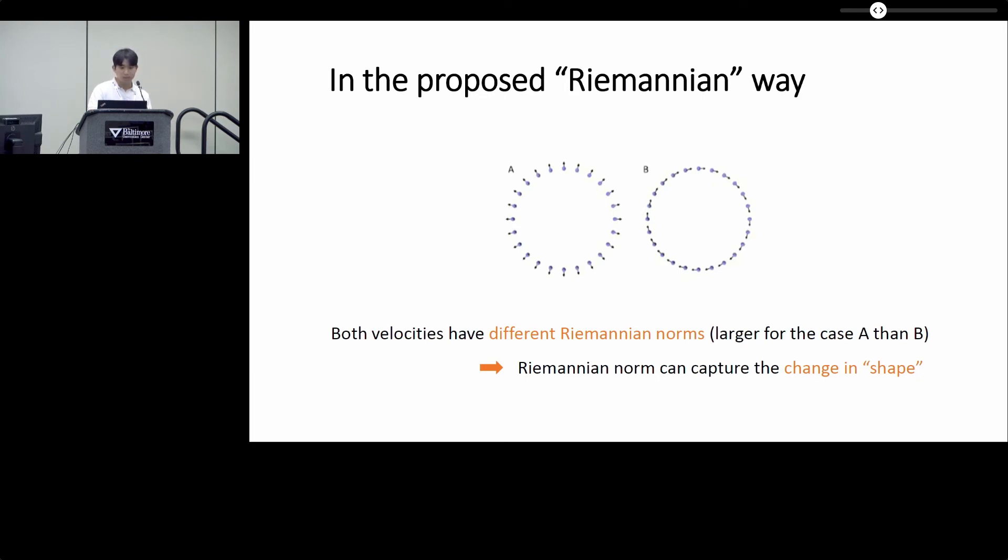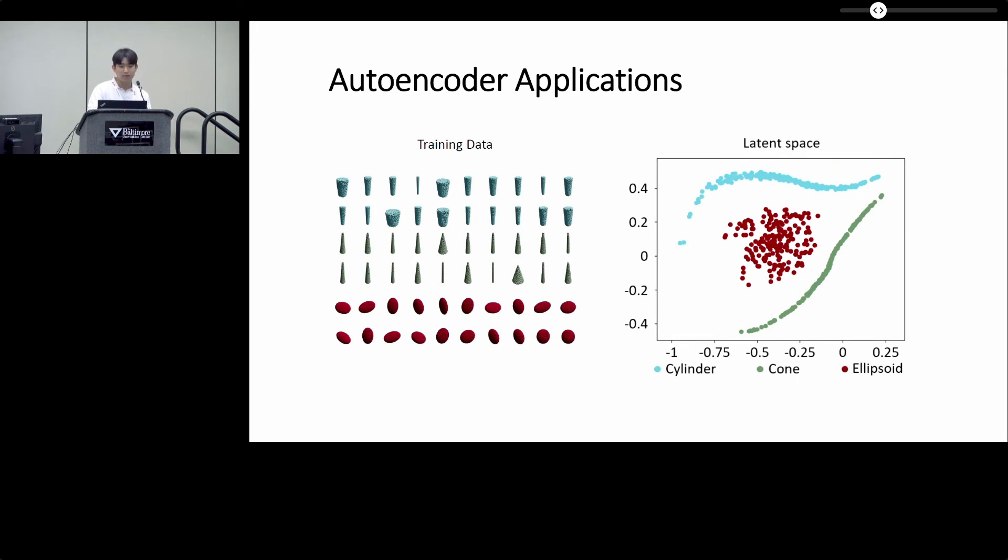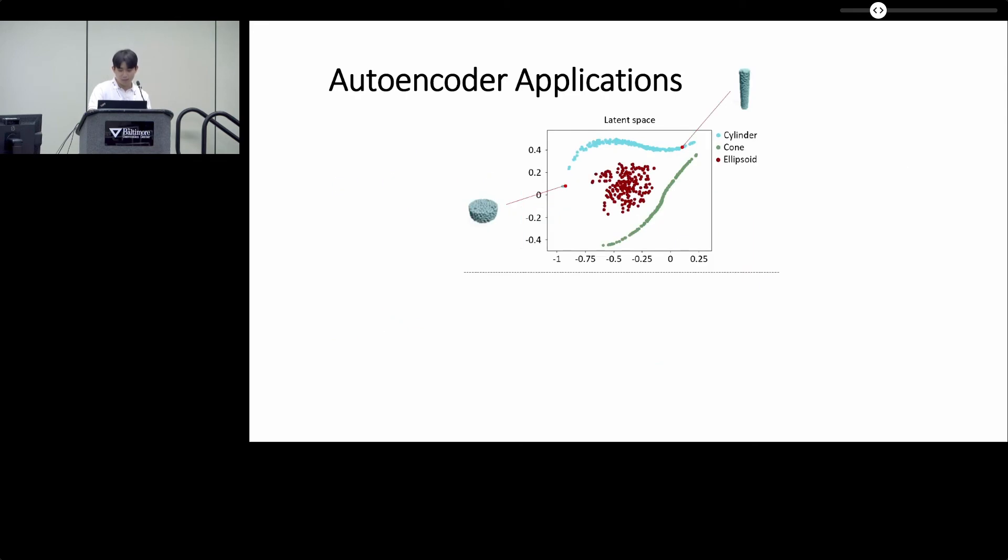We now introduce one application example, autoencoder. For cylinder and ellipsoid point cloud data, we train point cloud autoencoder with two-dimensional latent space. Consider two cylinders, tall and fat ones. If we linearly interpolate these in the latent space, then different-shaped objects, ellipsoids, suddenly appear in the middle of the interpolants.